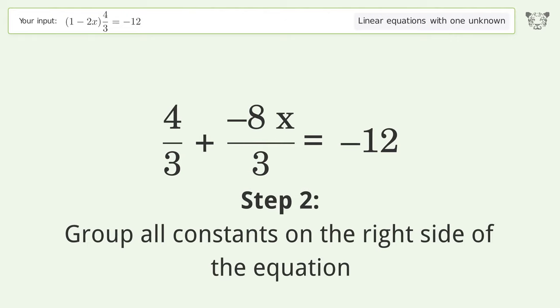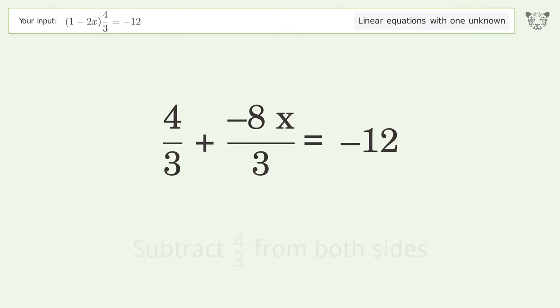Group all constants on the right side of the equation. Subtract 4 over 3 from both sides.